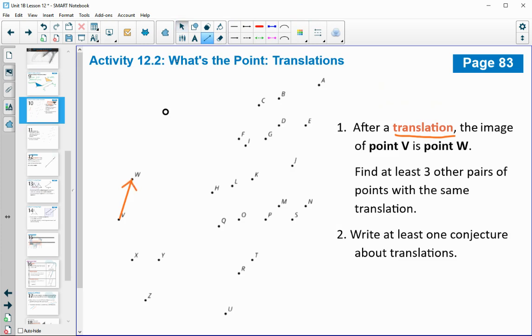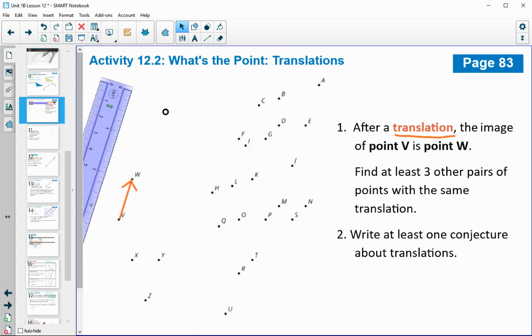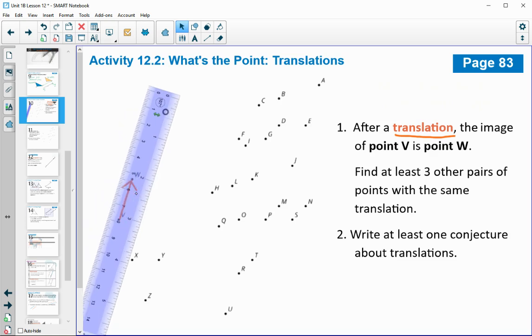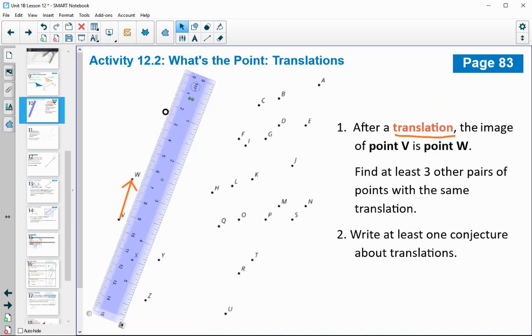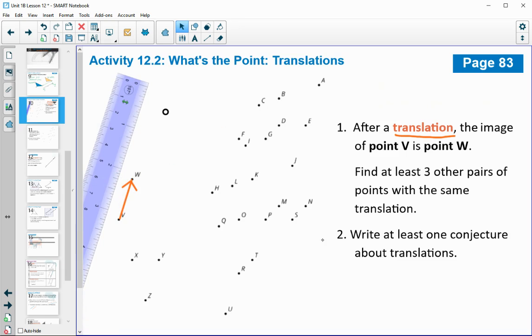Now what I want you to do is find other points that have this same translation that took V to W. When you're doing this, you put your ruler to connect those. When you go to find other points, it needs to be the same translation, the same distance and the same direction. When you move your ruler, don't rotate it at all. It needs to stay this exact same orientation, so this exact same direction, and then they need to be this far apart. See if you can find some other points that are connected by this exact same translation. You can pause the video and come back when you have found some.